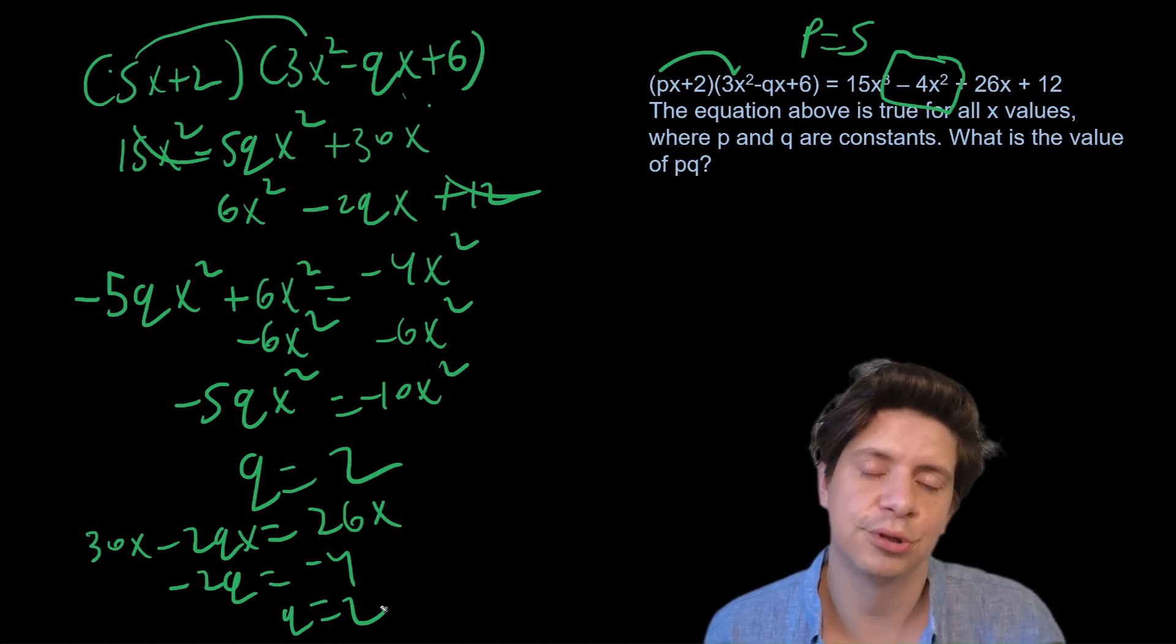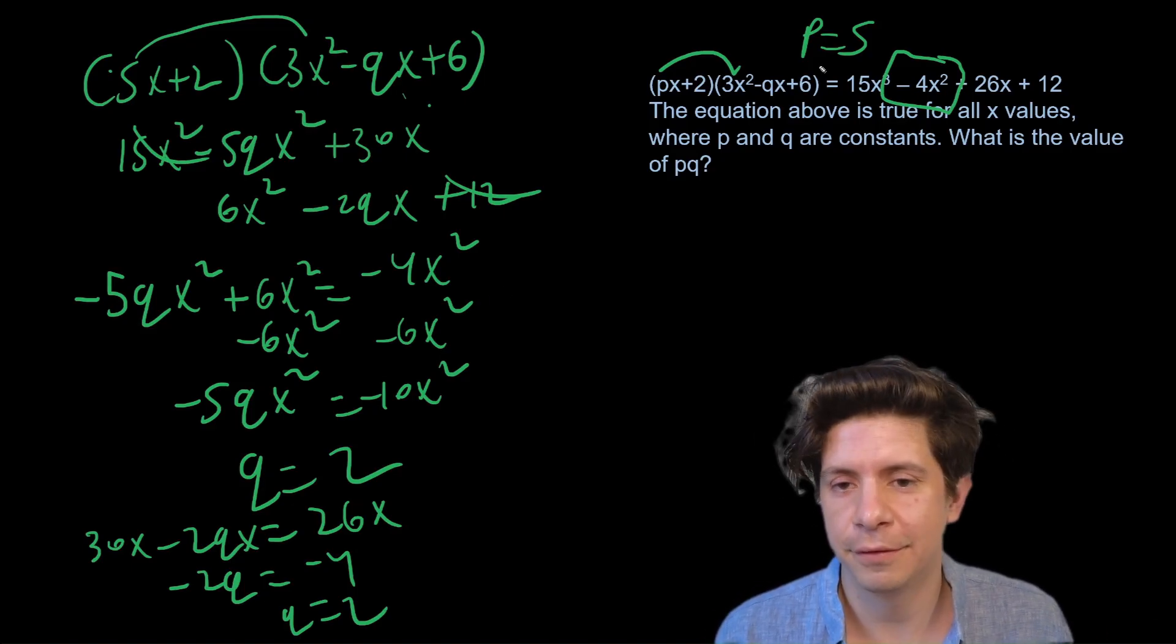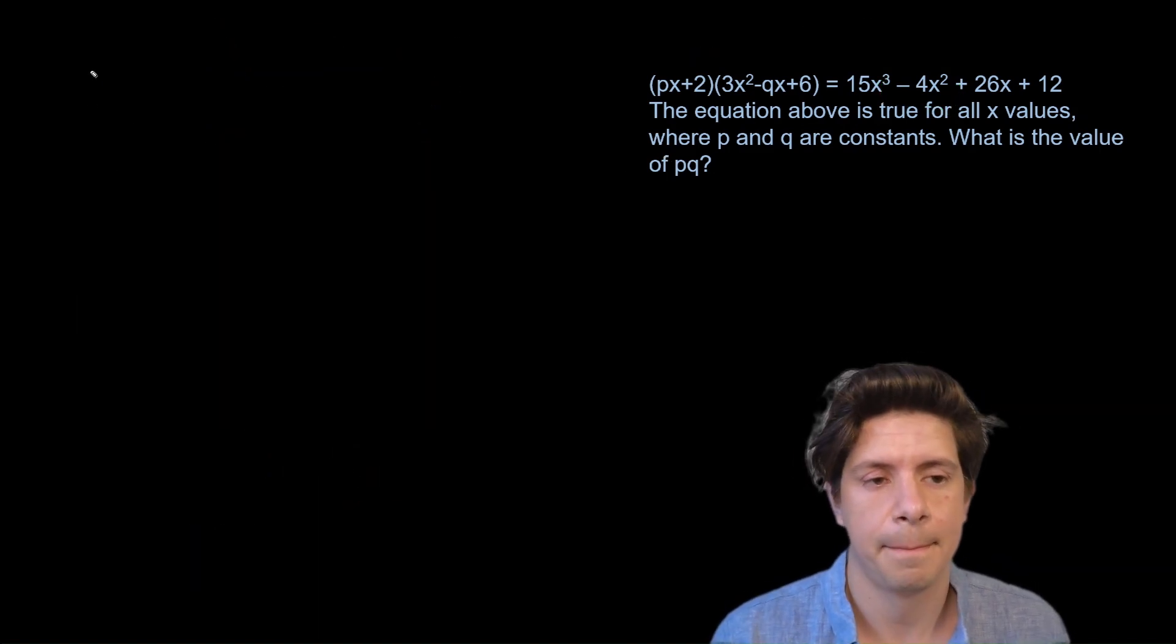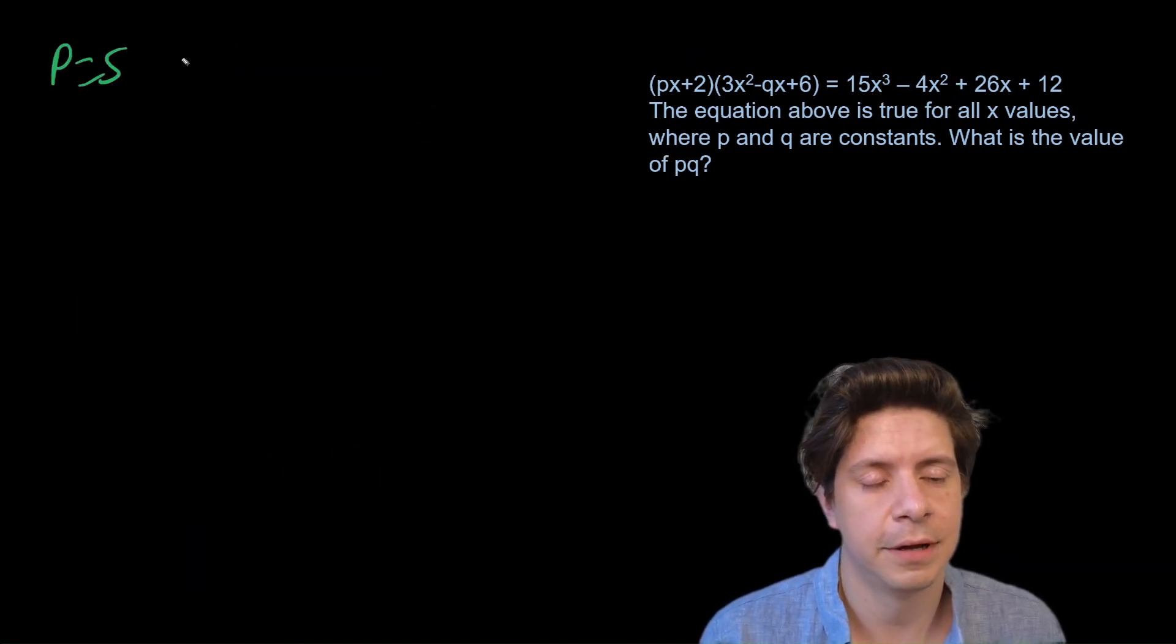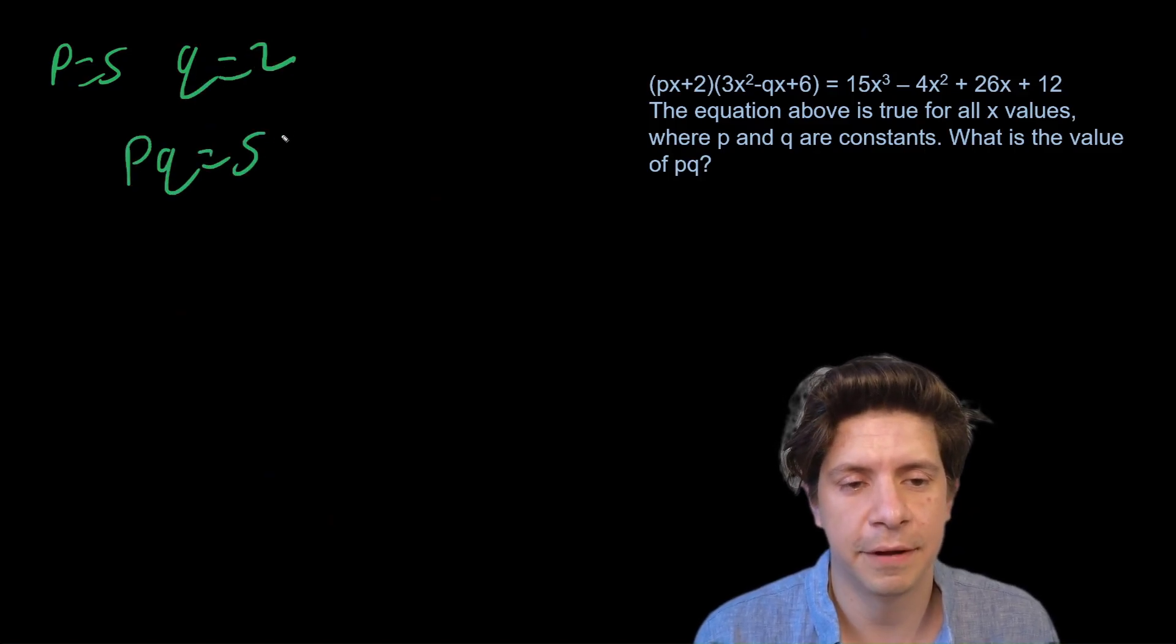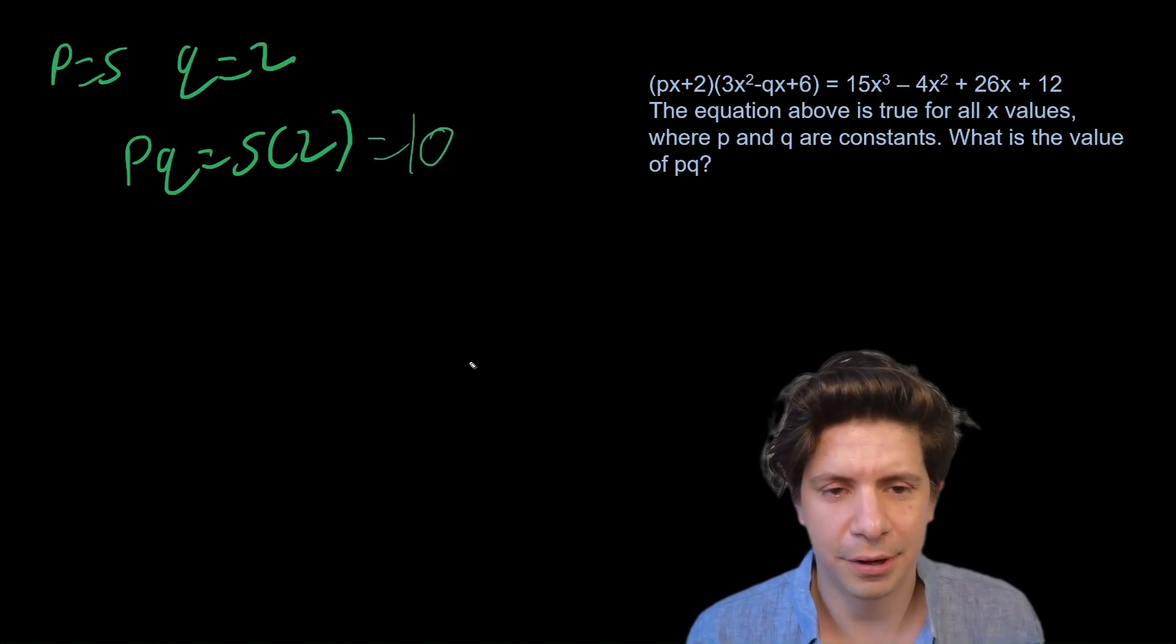Either one would work. You just have to keep the degrees consistent. Squares go with squares, singles go with singles, cubes go with cubes. And then we have p equals 5, q equals 2, so pq equals 5 times 2, that equals 10. Okay, not too bad at all, I think.